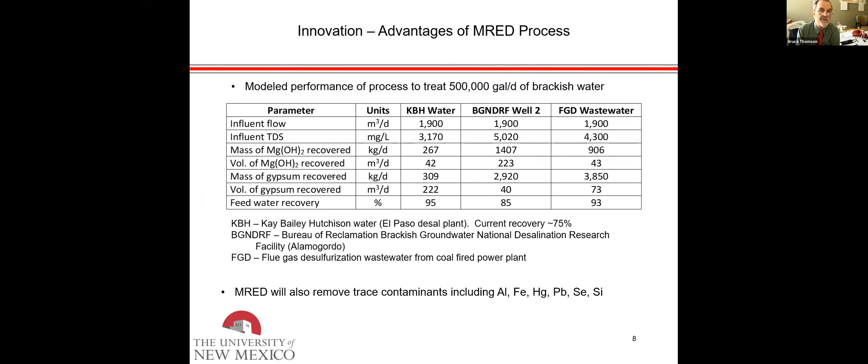Here's the advantage of the MRED process for a 500,000 gallon per day brackish water feed. Here is the Kay Bailey Hutchison plant: 500,000 gallons per day, influent TDS around 3,000 milligrams per liter. We recover something on the order of 270 kilograms of magnesium hydroxide, 42 cubic meters per day, and 309 kilograms per day of gypsum. Instead of recovering 75% of the feed water as is done at present, we're going to bump it up to over 90%.